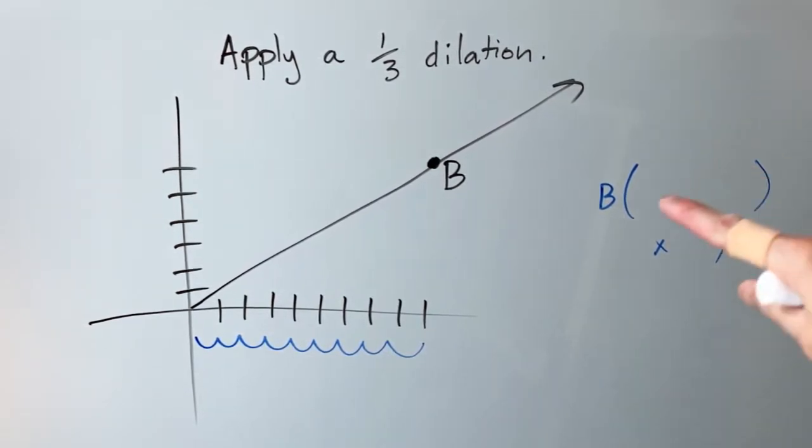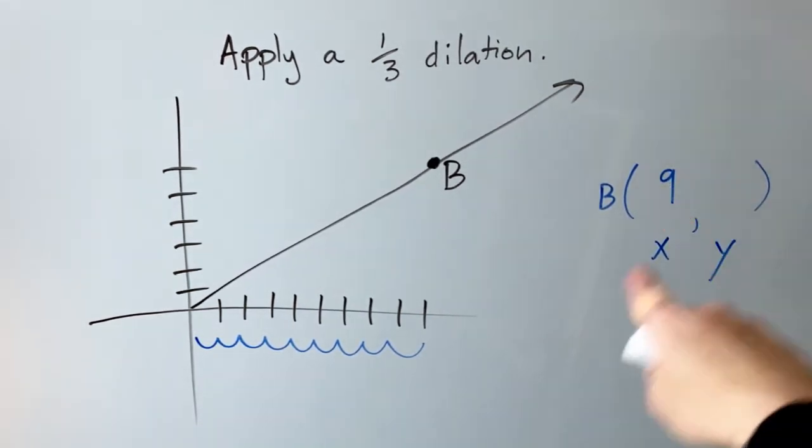So up here in the parentheses, I'm going to put positive nine. So I have positive nine, and the nine is positive because you went to the right.